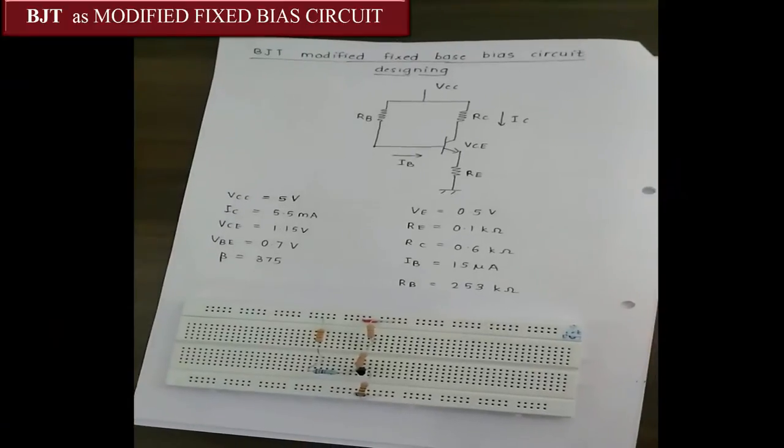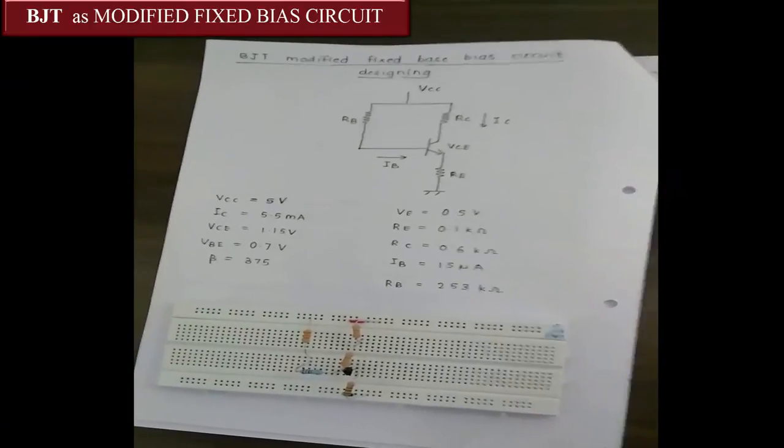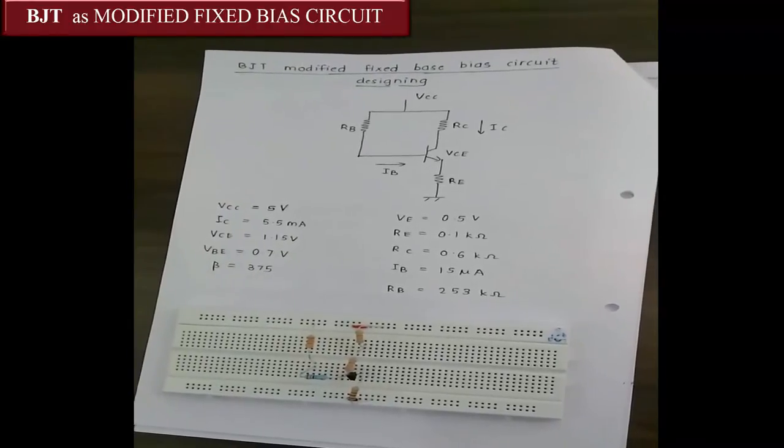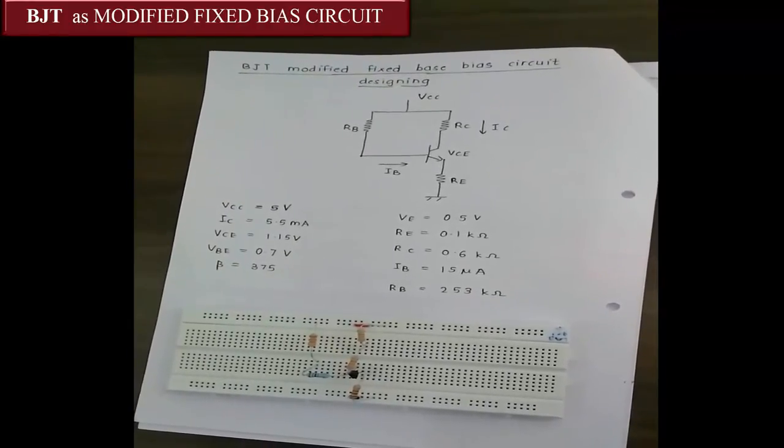As we have obtained the values of VE, RE, RC, IB and RB, now let us implement the modified fixed bias circuit on the breadboard.